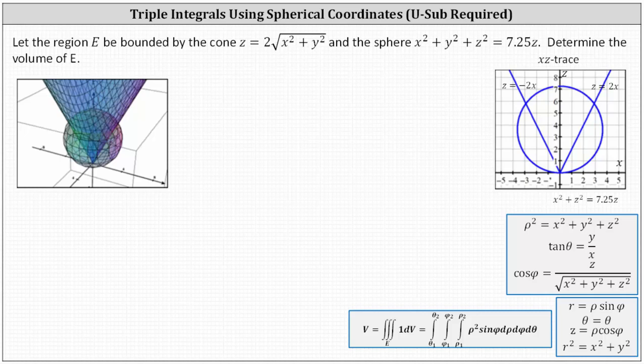Let the region E be bounded by the cone Z equals two times the square root of the quantity X squared plus Y squared, and the sphere X squared plus Y squared plus Z squared equals 7.25Z. Determine the volume of E.